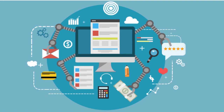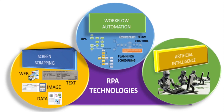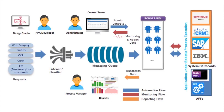Most importantly, RPA is only for clerical process automation and not for all human activities. RPA is software-based and can be used to perform various tasks. These include maintenance of records, queries, calculations, and transactions. Additionally, any application commonly used by your company can be operated by RPA.